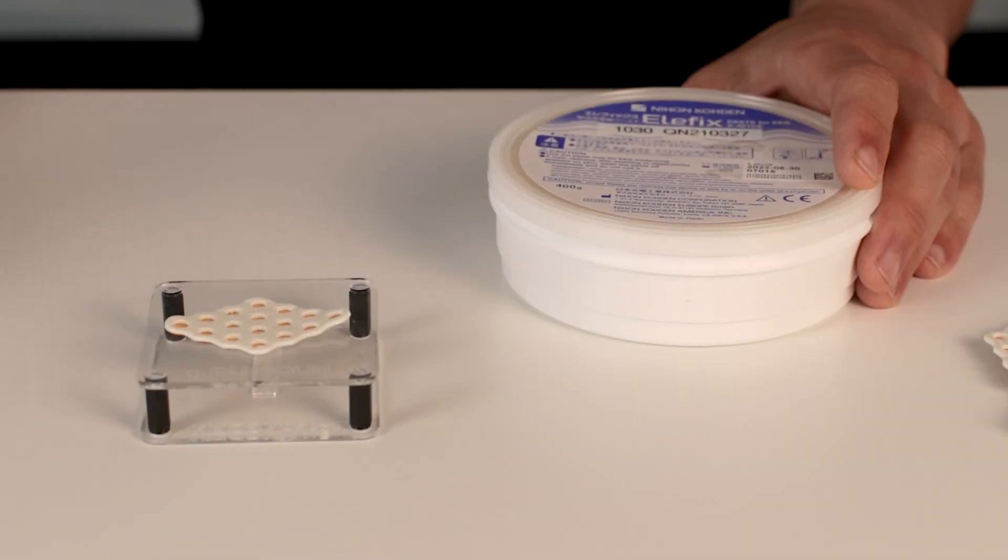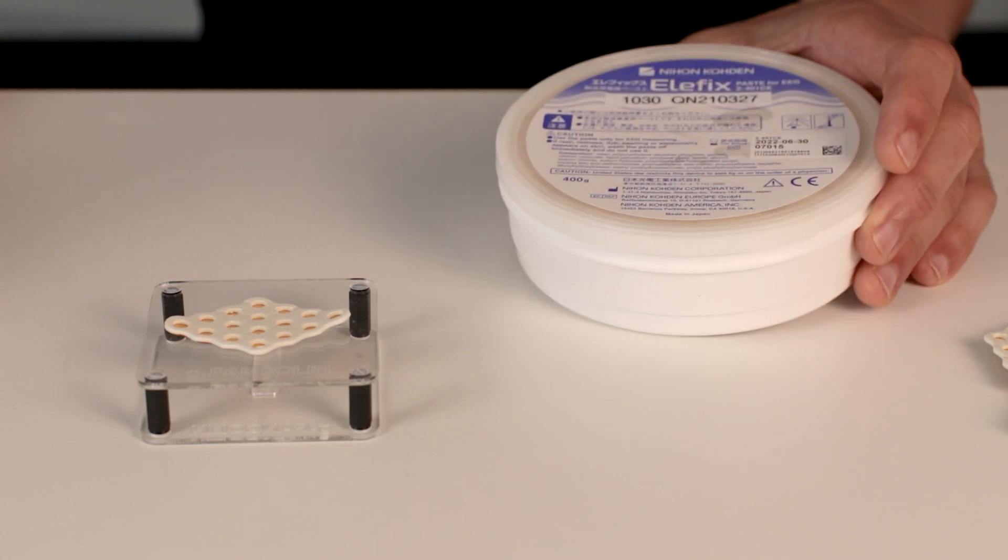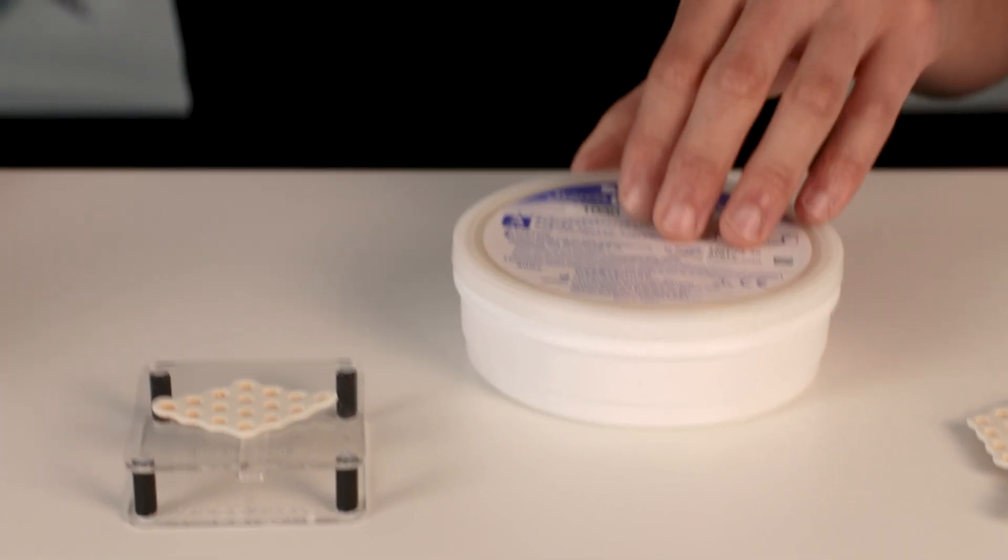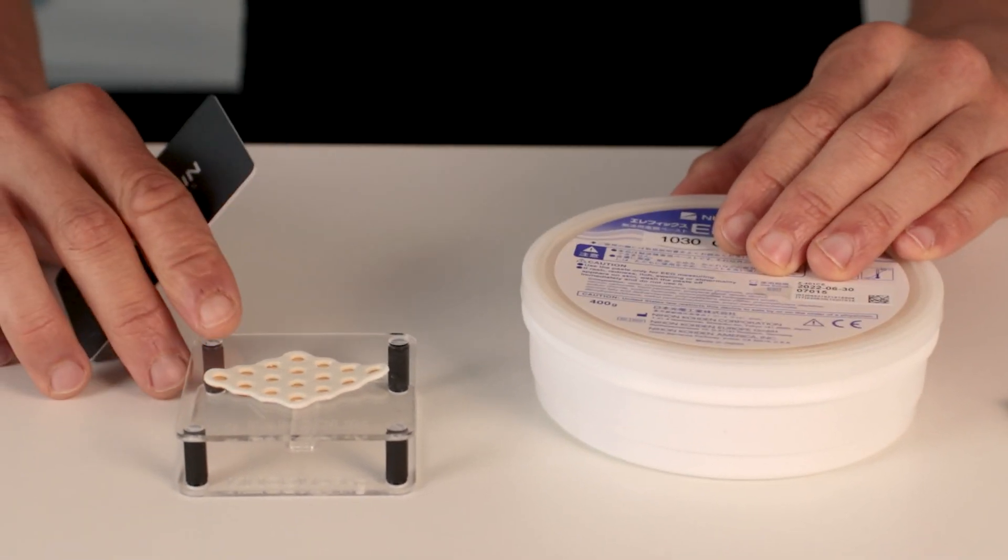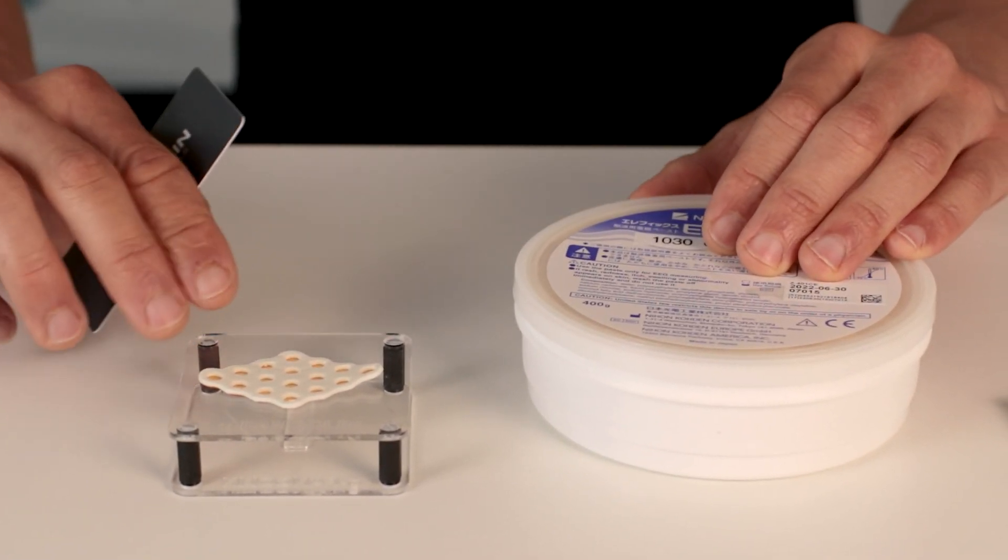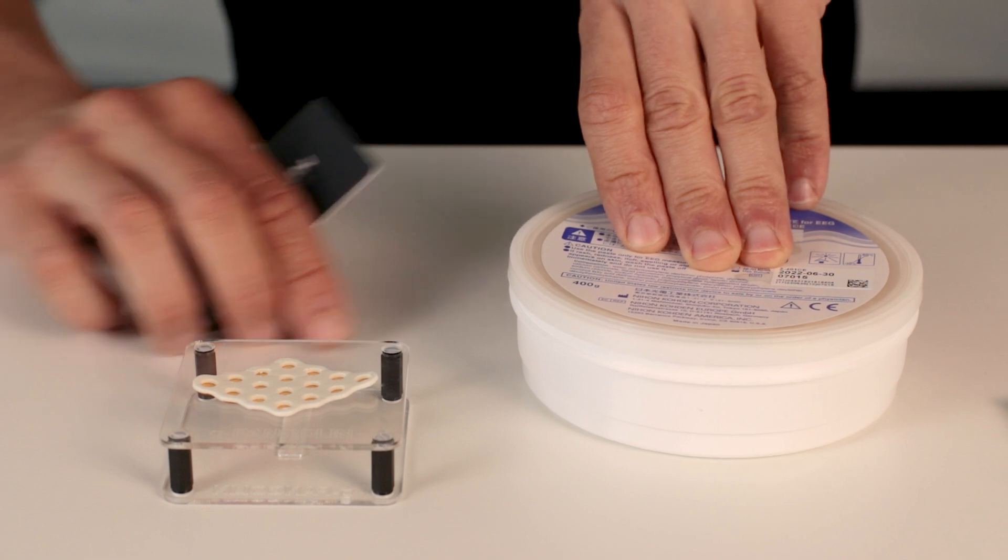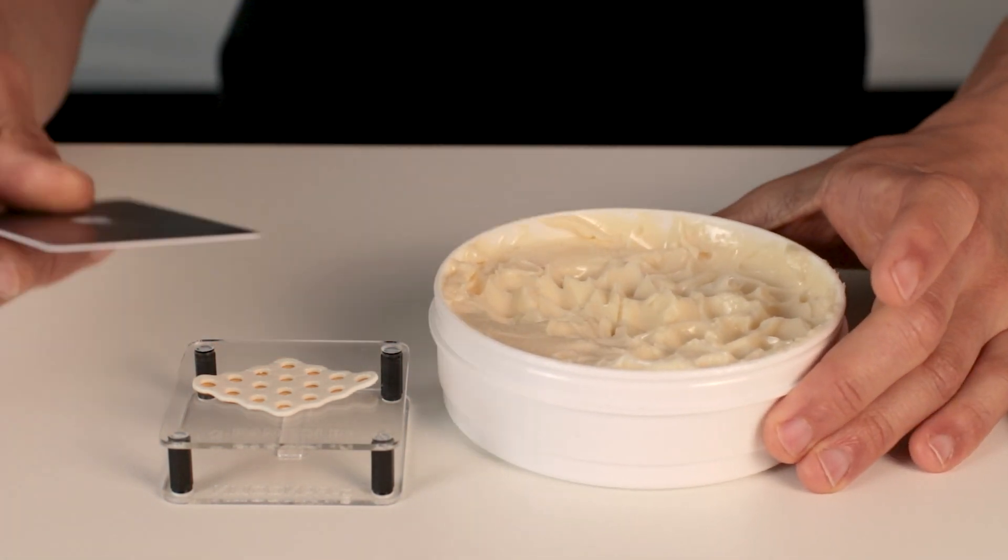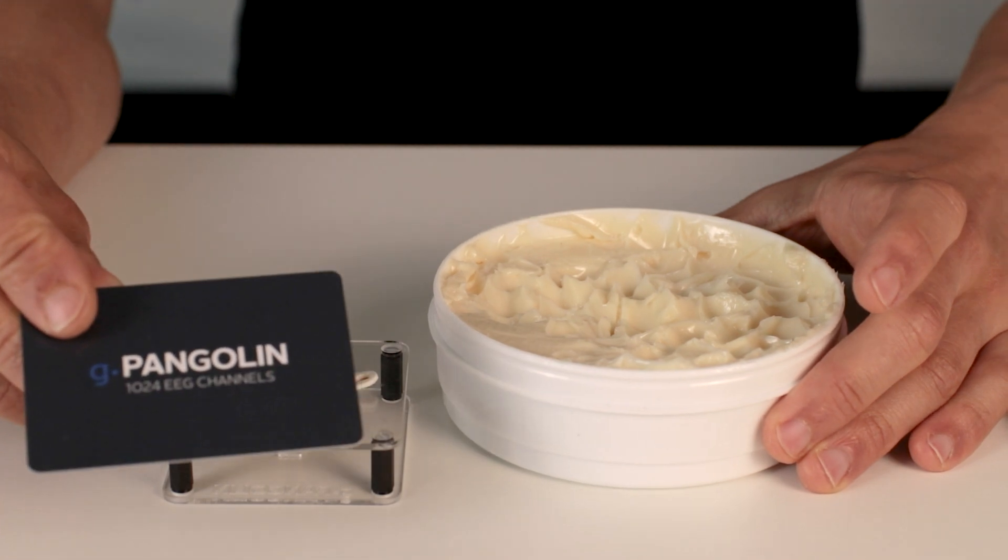As a next step we apply the conductive LFX gel to the prepared grid with the adhesive. So you place your grid with the adhesive applied into your preparation tool and we apply the LFX gel with this preparation card.